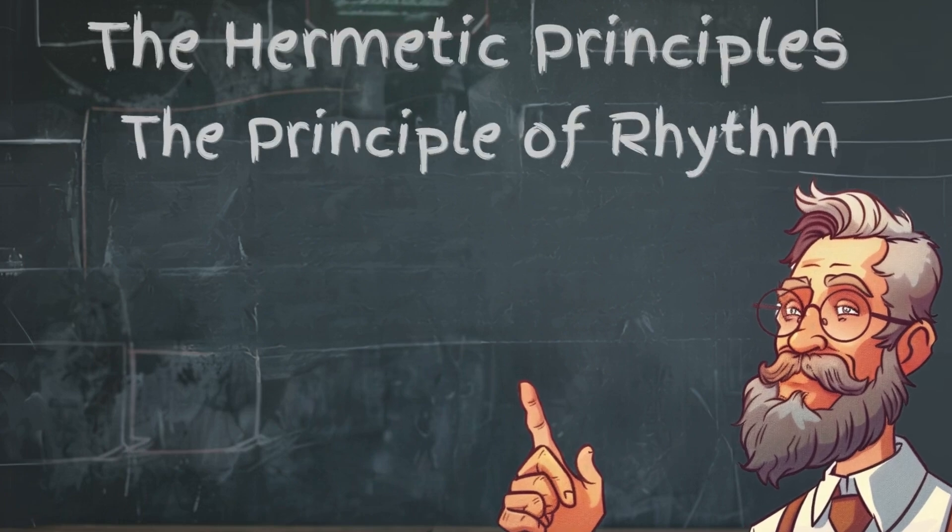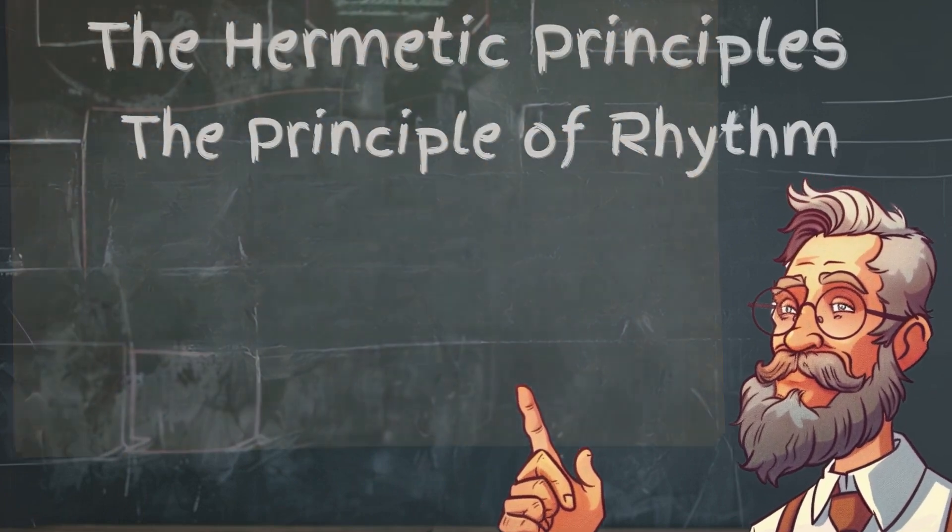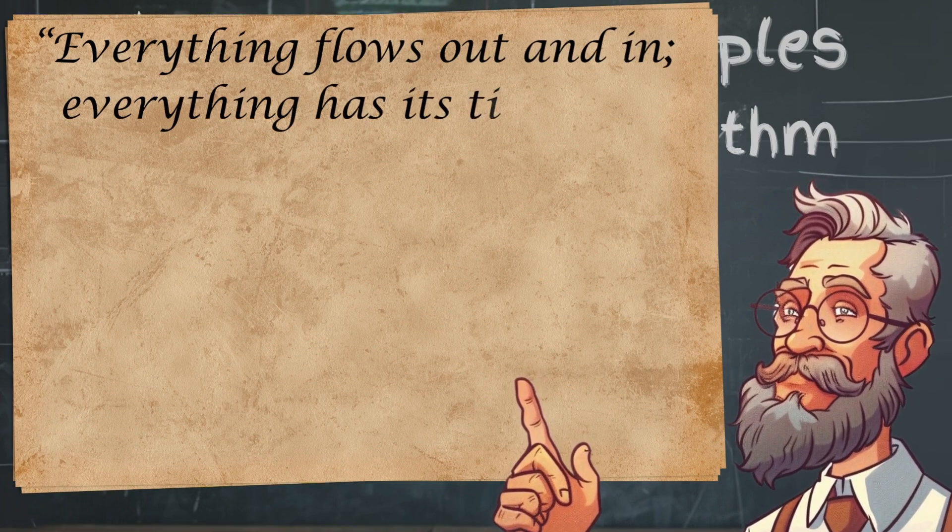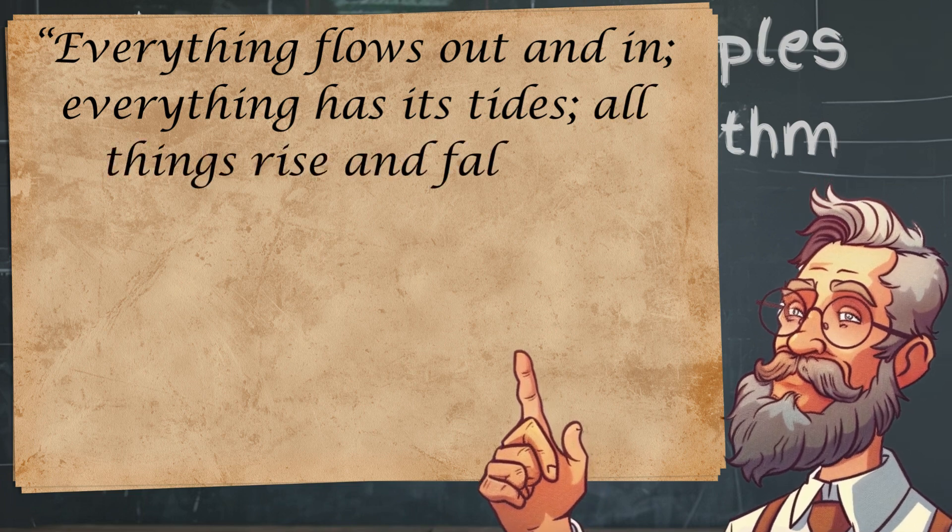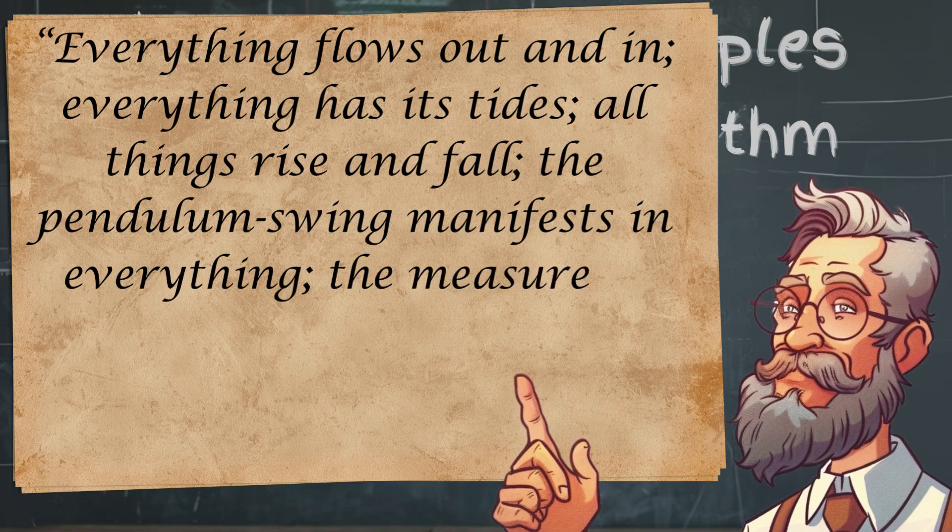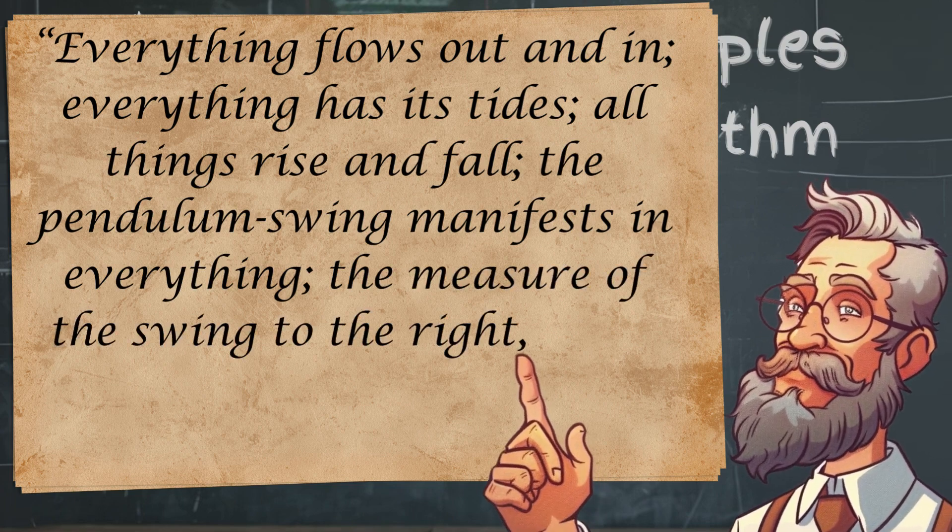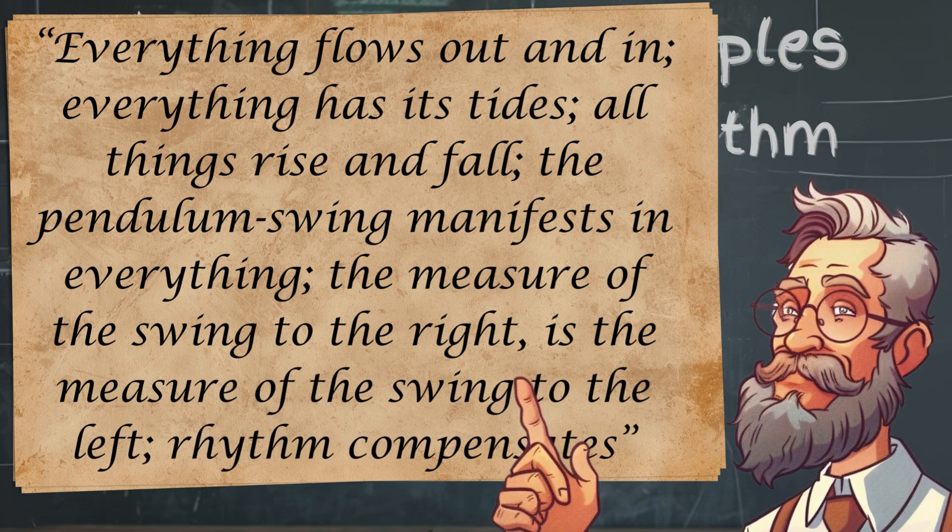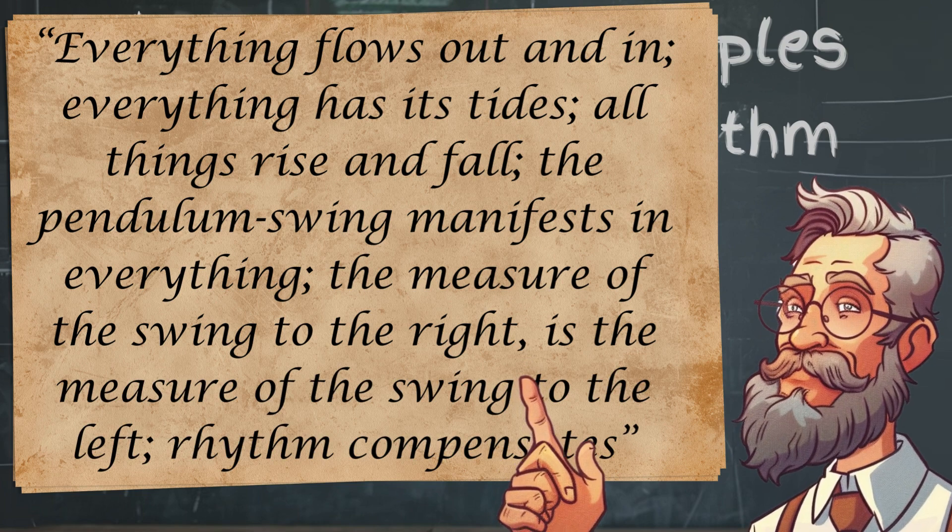Today, we're continuing our discussion on the hermetic principles with the principle of rhythm. The Kybalion says, everything flows out and in. Everything has its tides. All things rise and fall. The pendulum swing manifests in everything. The measure of the swing to the right is the measure of the swing to the left. Rhythm compensates. What does this statement tell us? Let's find out.